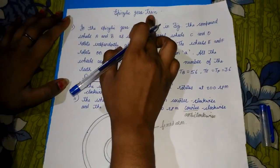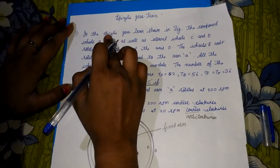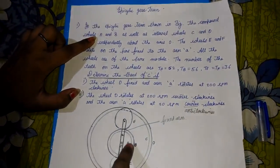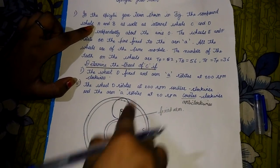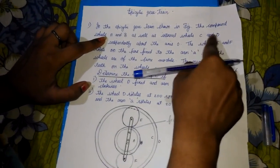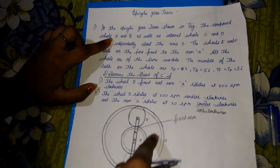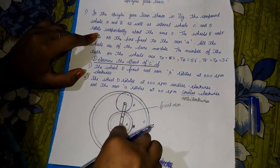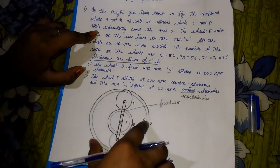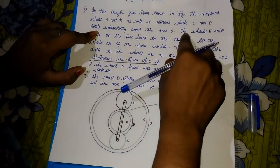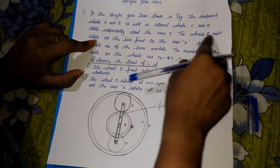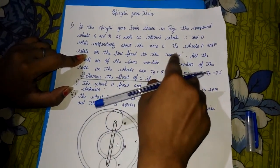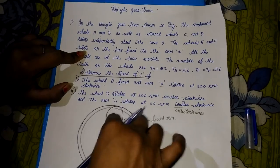Let us learn about the epicyclic gear train. In this epicyclic gear train, shown in the figure, the compound wheels A and B, as well as internal wheels C and D, rotate independently about the axis O — meaning they are not fixed to the pin. The wheels E and F rotate on a pin fixed to the arm, and E and F are fixed to that pin.